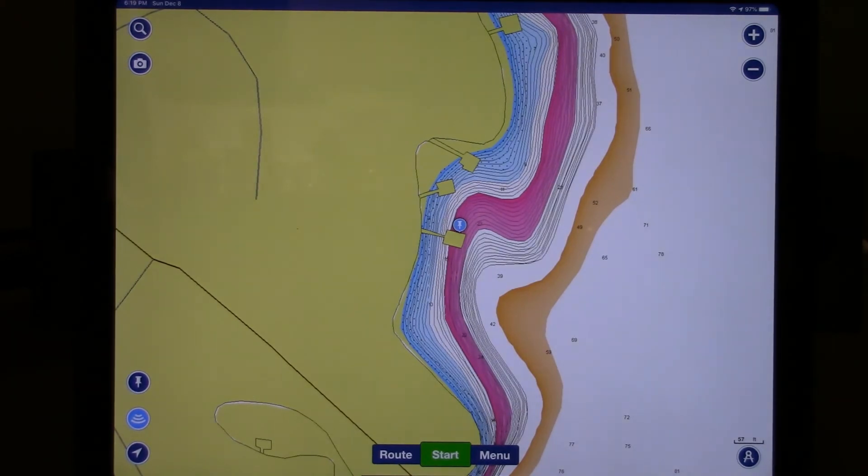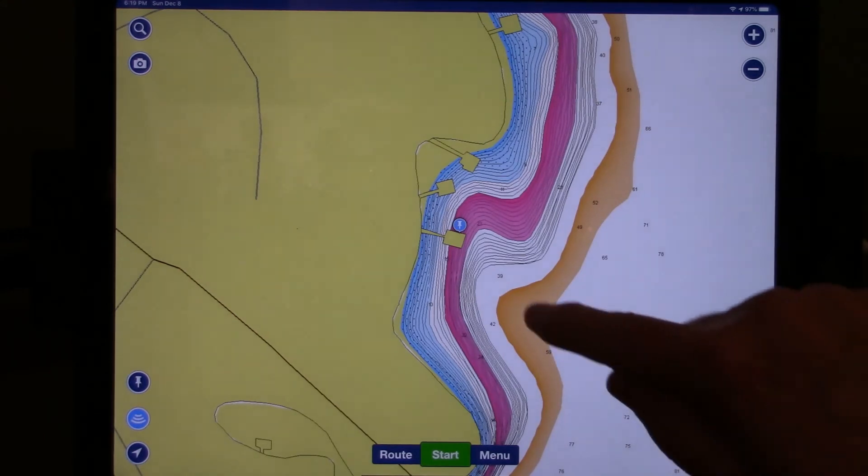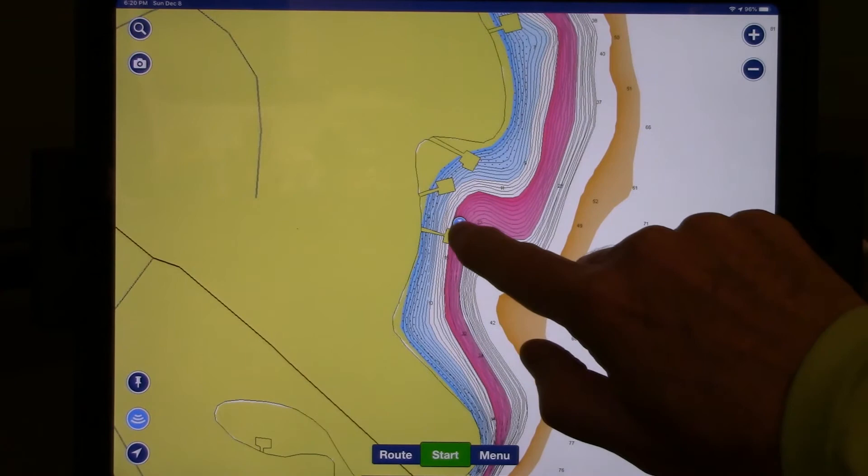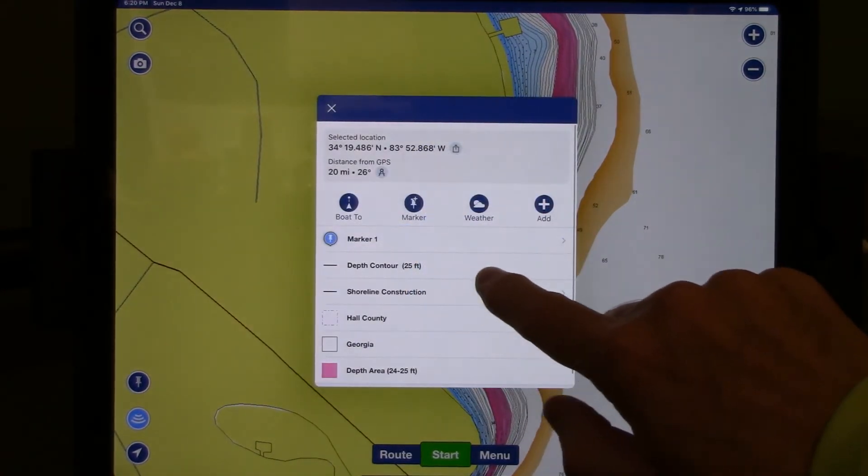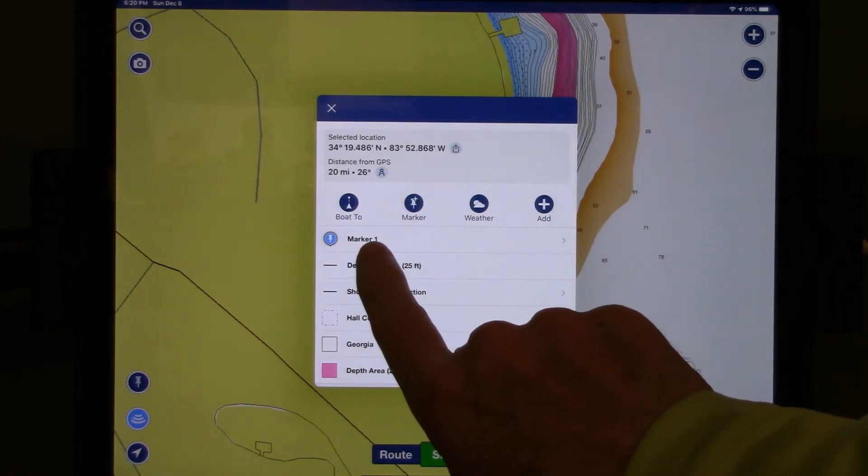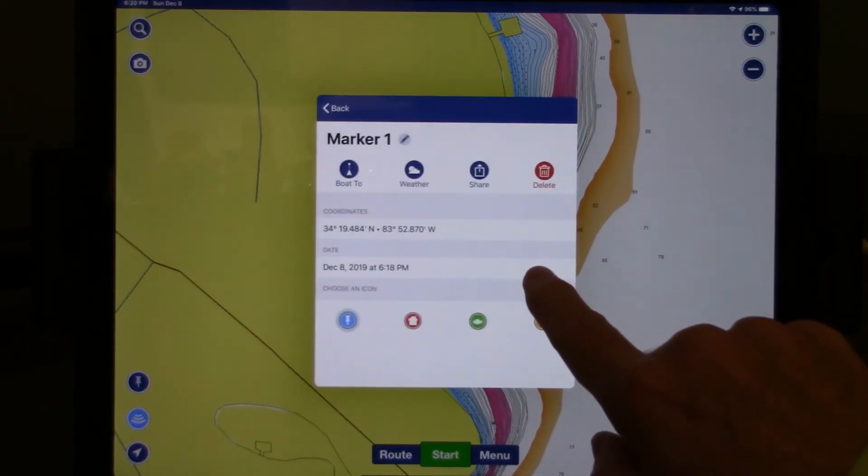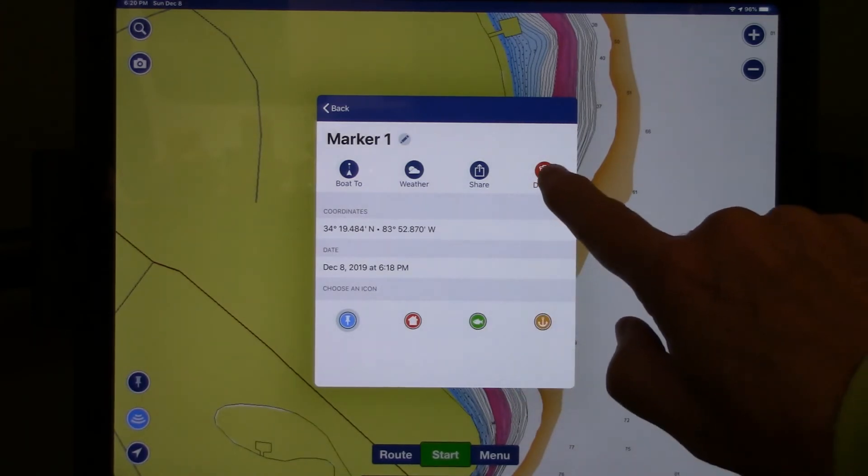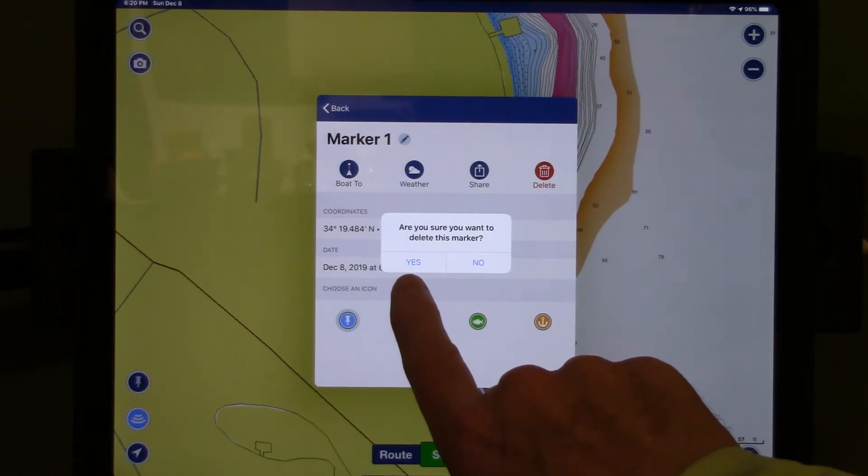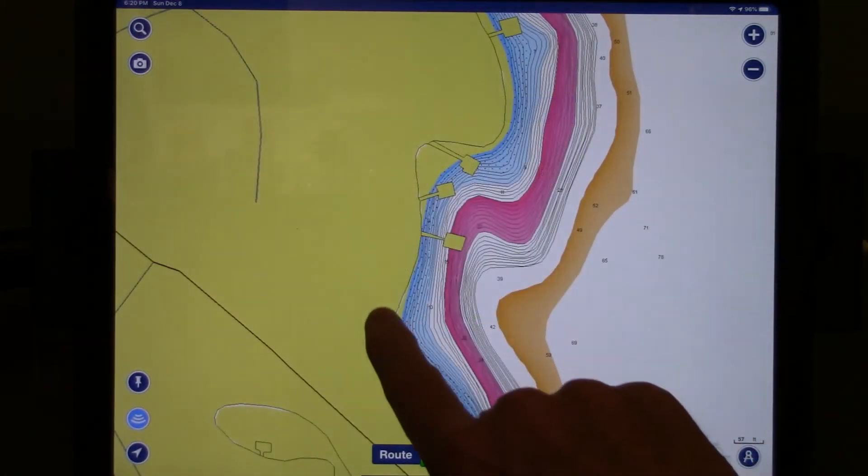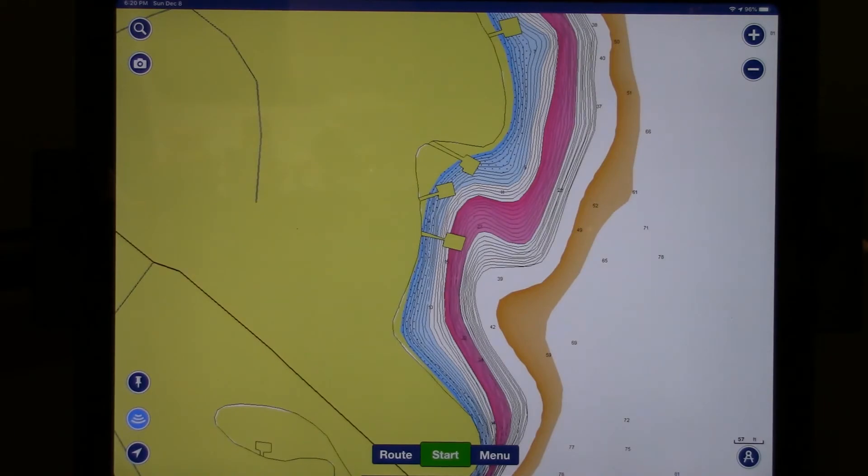So now let's assume that I've investigated this dock and I've determined that it's not holding fish. So I'll probably want to delete this marker as it's not going to be a productive location for me to fish. So I'll touch the push pin icon, select marker one with the arrow, and hit delete. Click yes to confirm that you want to delete the marker. And now when I return to the chart, that marker is no longer there.